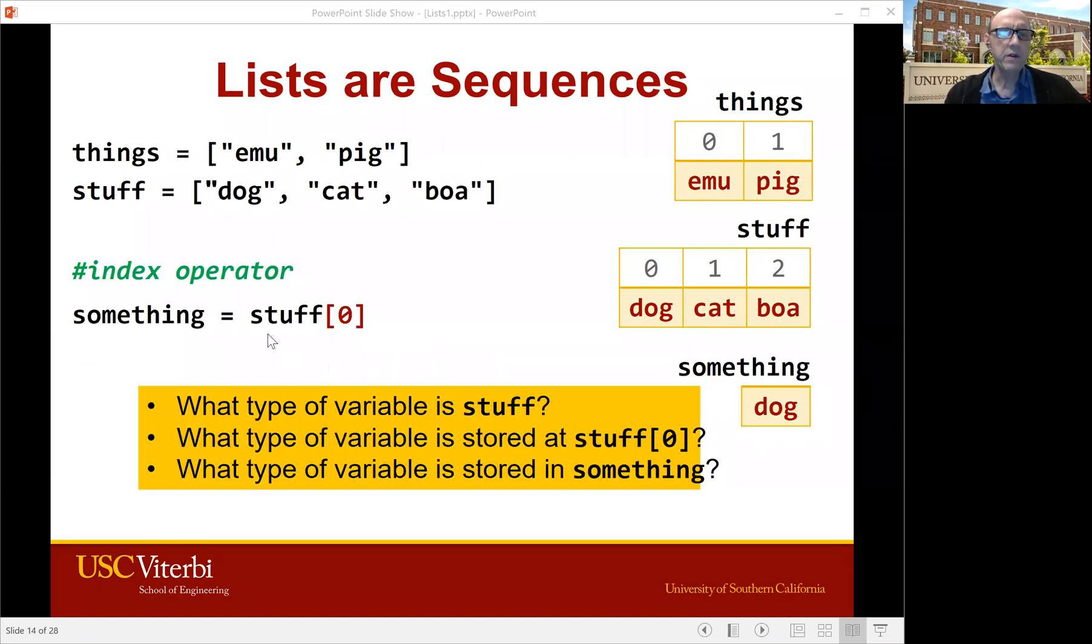So here's another thing we could do with our original list. We can pull out stuff bracket zero. Remember when we did that with string, it pulled off the first character, the zero character. Well for stuff, this pulls out the first item, which is dog. So something is now dog.